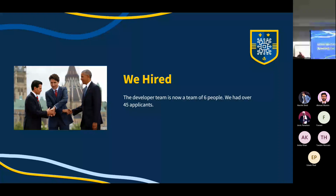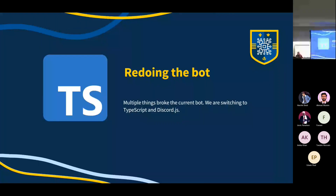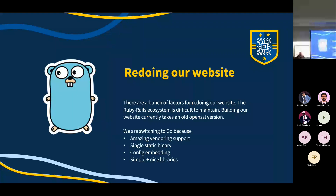The first big thing we've been working on since the last AGM is rewriting the Discord bot. It was written in Ruby; now we're writing it in TypeScript. We've also been redoing our website. Currently our website is written in Ruby on Rails, which has a very bad ecosystem and is very difficult to maintain. We chose to rewrite it in Go because it makes it easier to maintain, gives us amazing vendoring support, the ability to create a single static binary, and it's a very simple language with a lot of nice libraries.